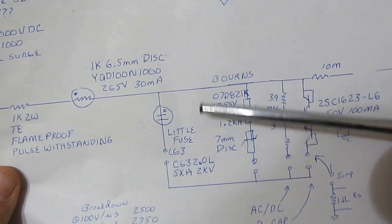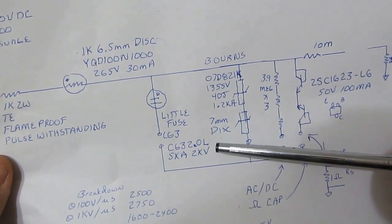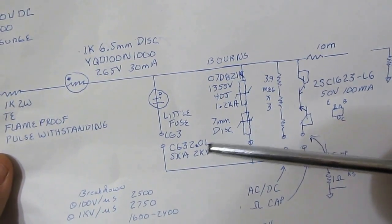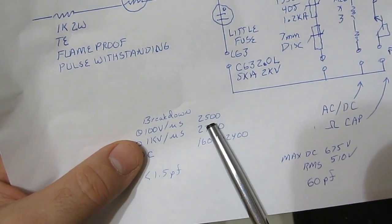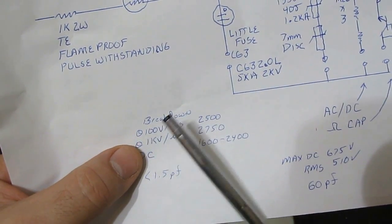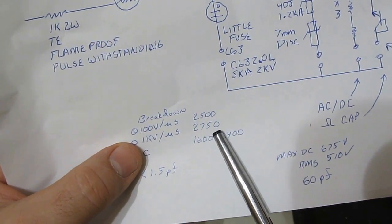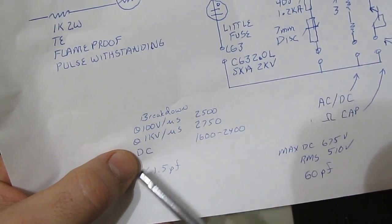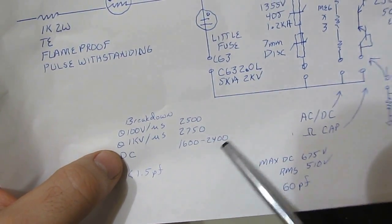For the gas discharge tube, I'm going to be using a little fused part. This part is a CG32.0L. If we supply a 100 volt per microsecond pulse, the part will break down at 2,500 volts. At 1kV per microsecond, it'll break down at 2750. With DC, its breakdown voltage is between 1600 and 2400 volts.